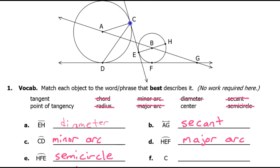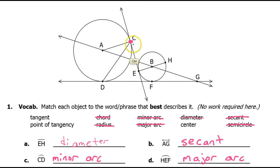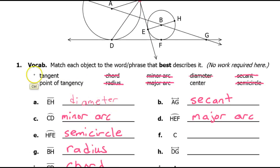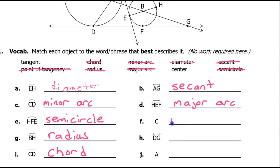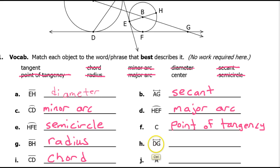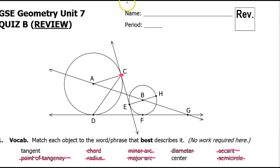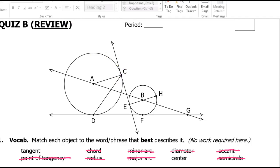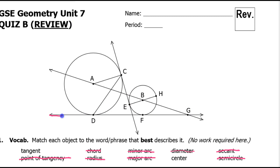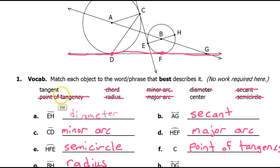Point C — I can see a tangent line right here, so point C must be the point of tangency because it's the point where the tangent touches the circle. What about line DG? Line DG down here is a tangent. It's actually a common tangent — you can see it's touching each circle at a single point.